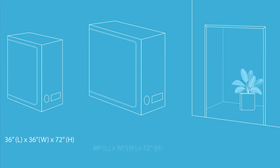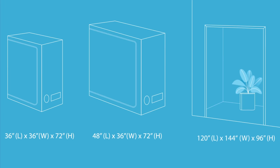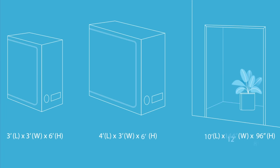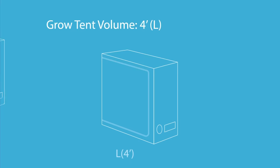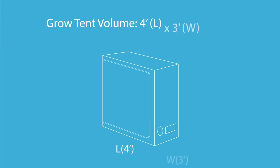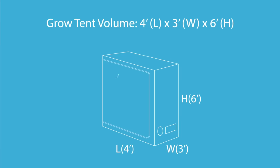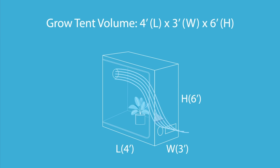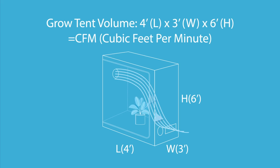To find the amount of airflow needed for your grow tent, first find its volume in cubic feet. Convert the space's dimensions from inches to feet, then multiply its length by its width and by its height. For optimal growth, you would want to exchange the entire volume of air in your grow space at least once every minute, so the required airflow would simply be the tent's volume in cubic feet per minute, or CFM.